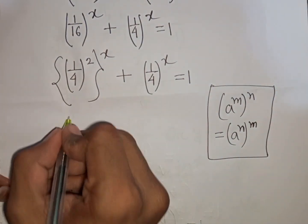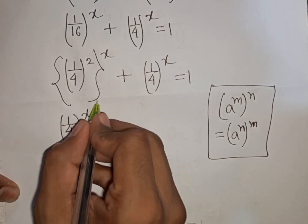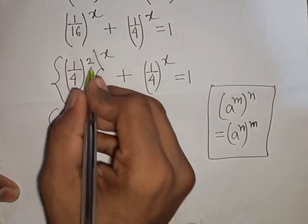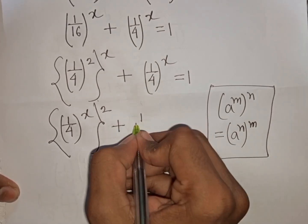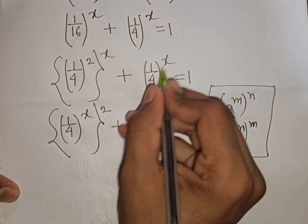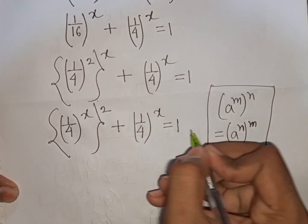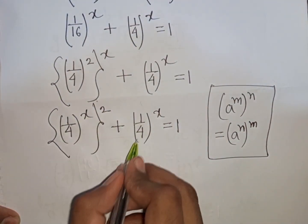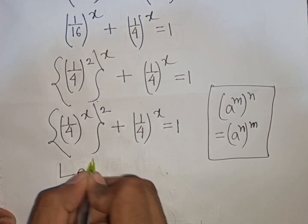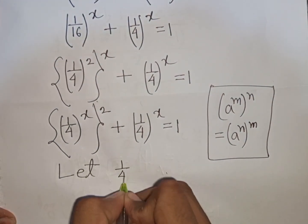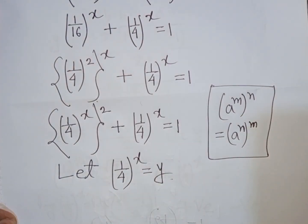So we can write [(1/4)^x]^2 + (1/4)^x = 1. Both terms contain (1/4)^x, so let y = (1/4)^x as a substitution.